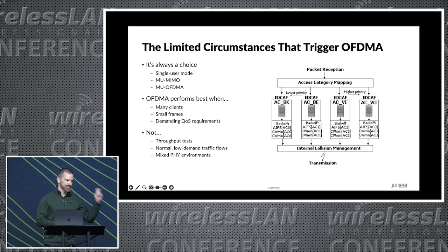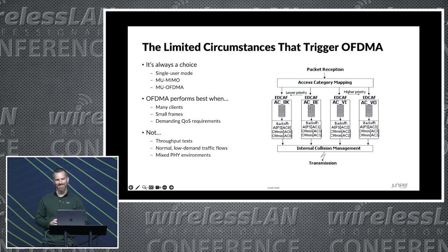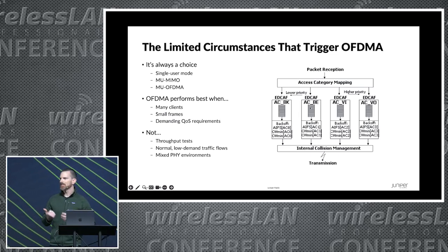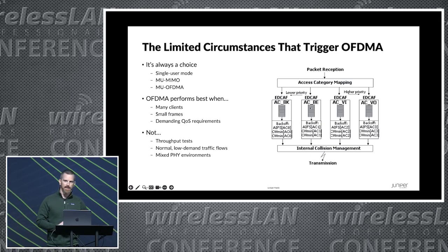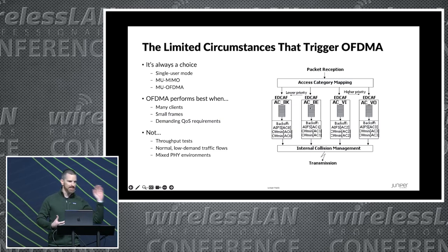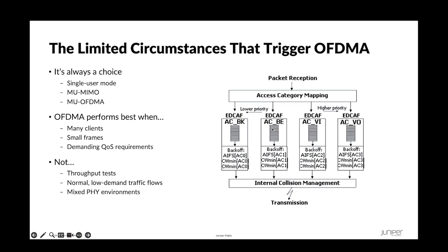The AP can choose to keep using single user mode, it can choose to do multi-user MIMO — probably won't — or it can do OFDMA. A lot of the times single user mode works great and that's what the AP does, even when there's a lot of congestion. Part of that is because with 1024 QAM, the AP can send a lot of packets really fast. So if it's emptying its buffers really fast, we don't need to do anything special. It's when those buffers start to fill up and there are a lot of small frames that need to be transmitted to a lot of different clients that we meet the conditions for OFDMA. And that tends to be in real-world networks, burst conditions — not something that happens all the time.